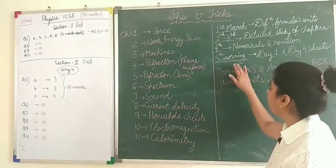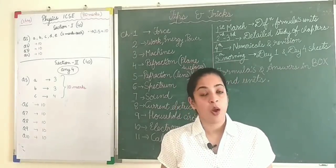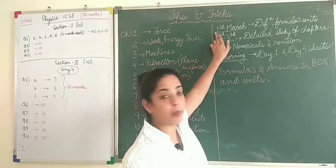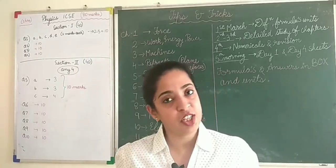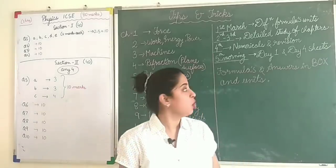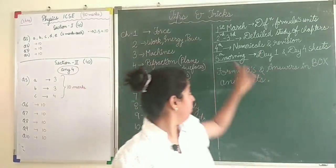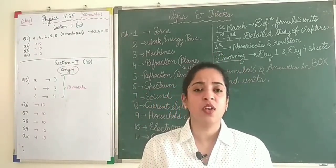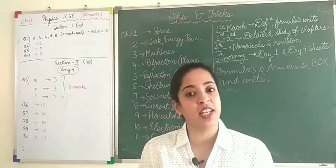On the morning of 5th March, when you have to give your exam, take out the sheets you prepared on the 1st — the sheets of formulas, definitions, and units — and give them a quick recap. Also take out the solved numericals you did on the 4th and give them a quick read. This way you will be thoroughly prepared and will not face any nervousness.